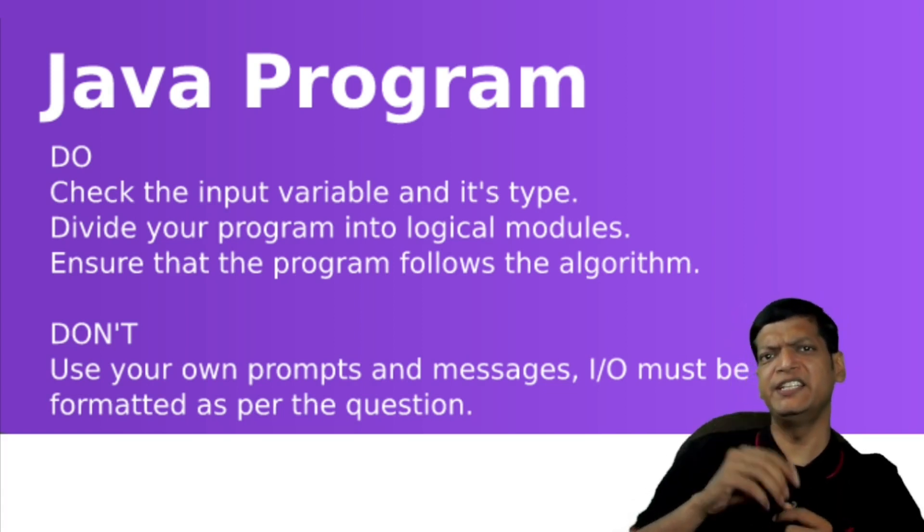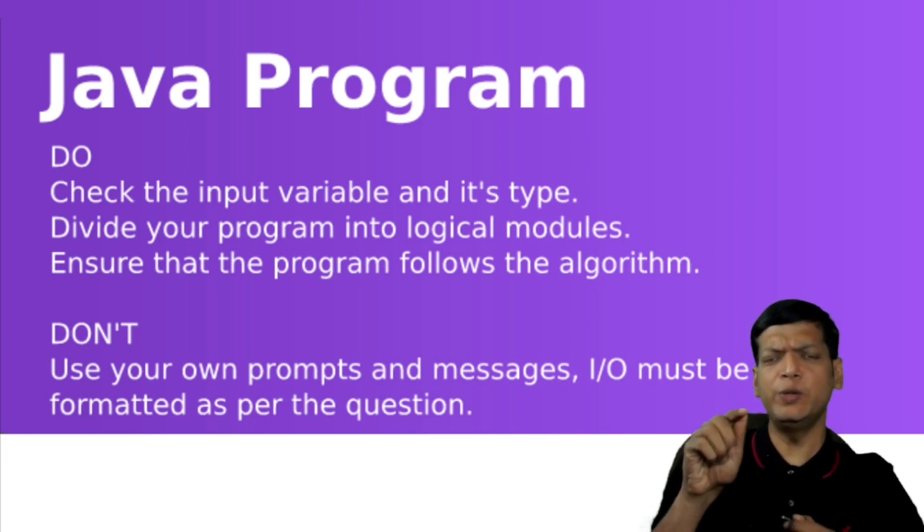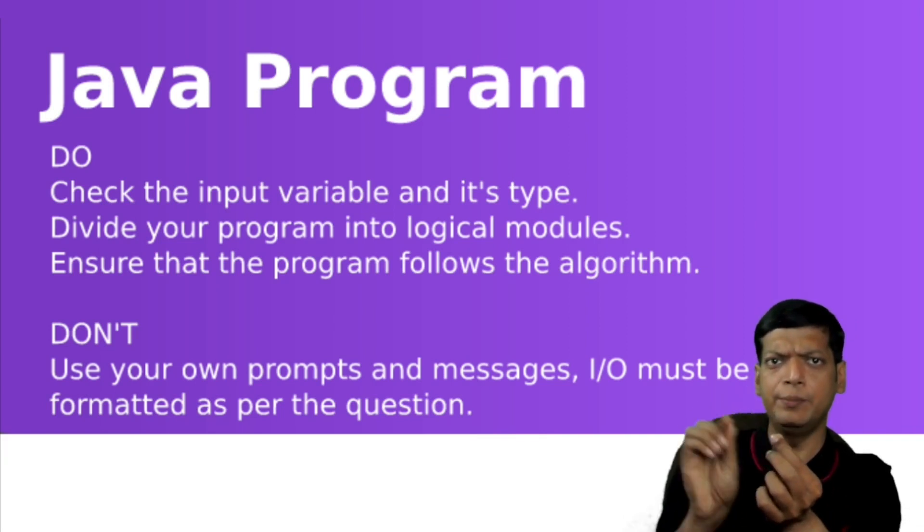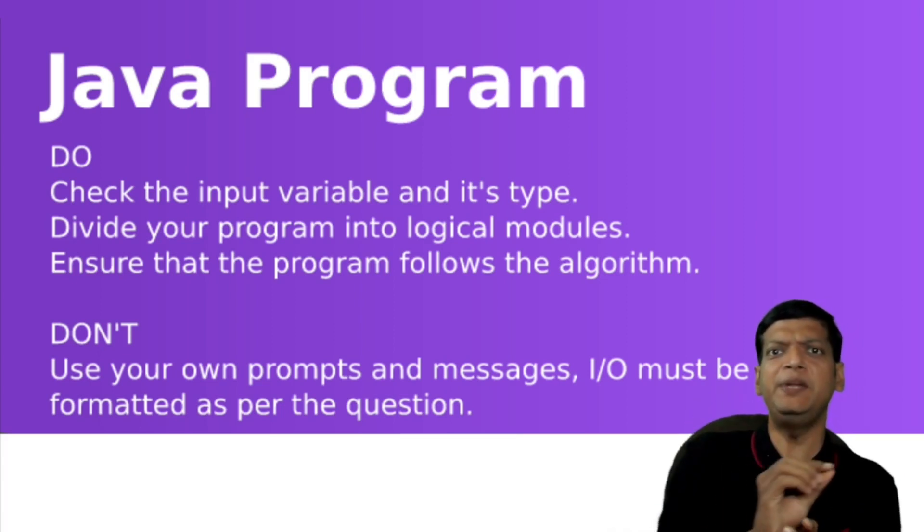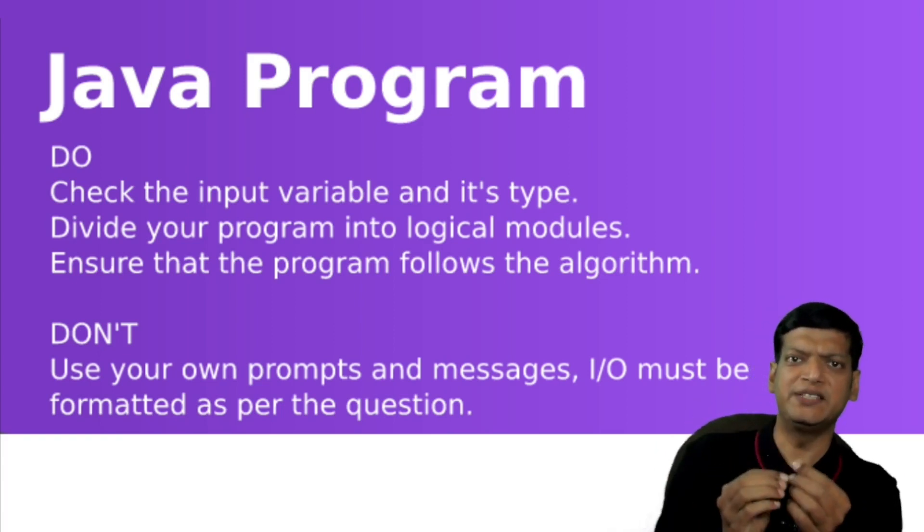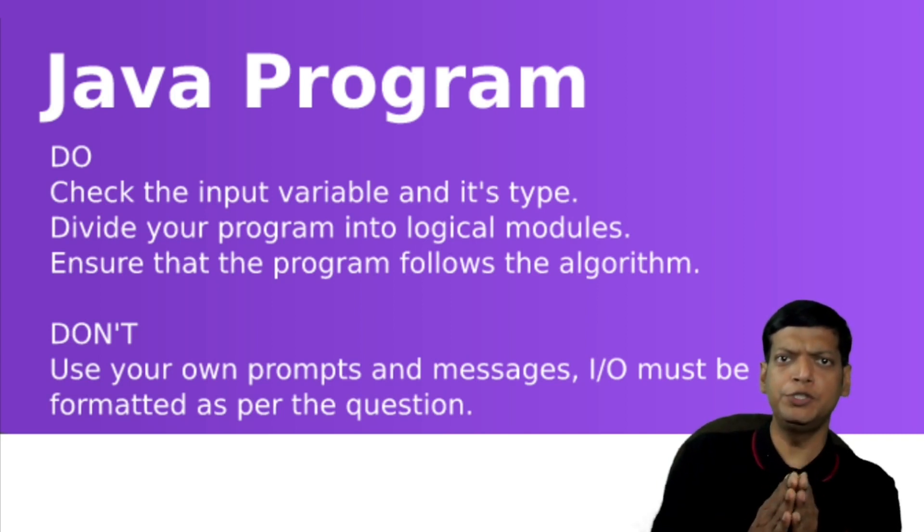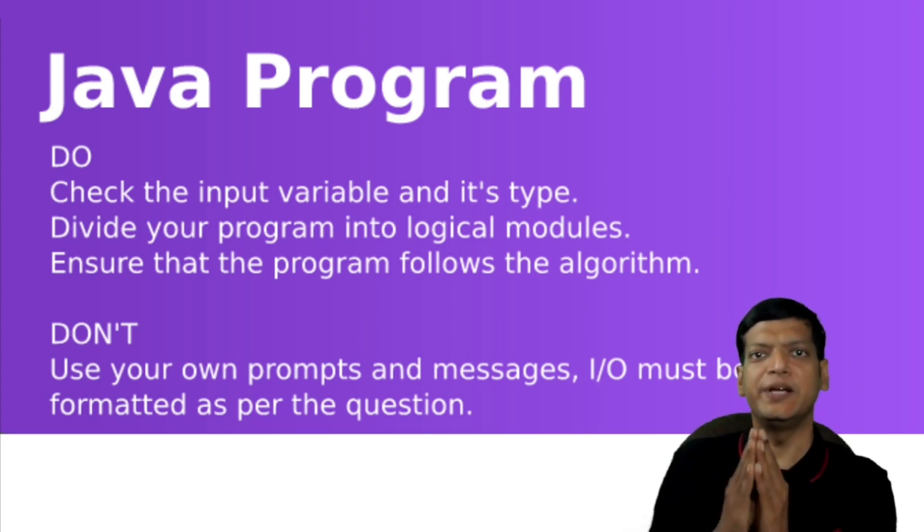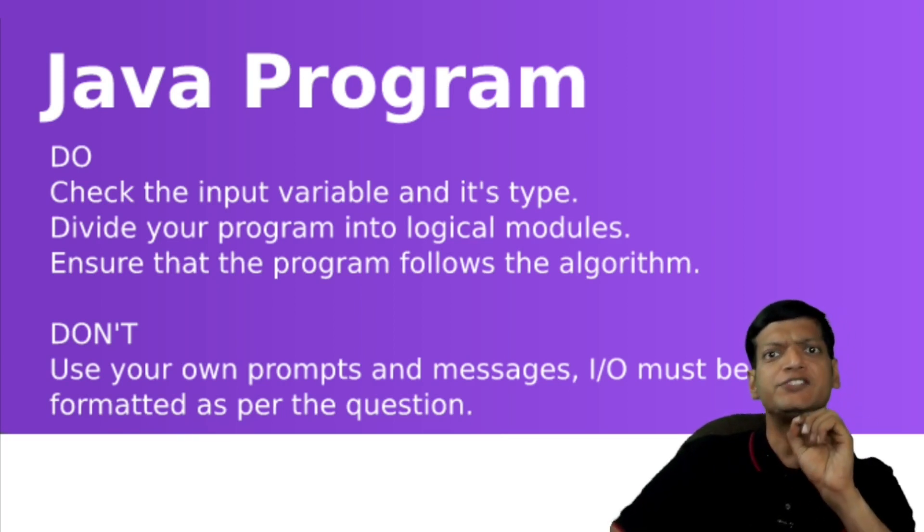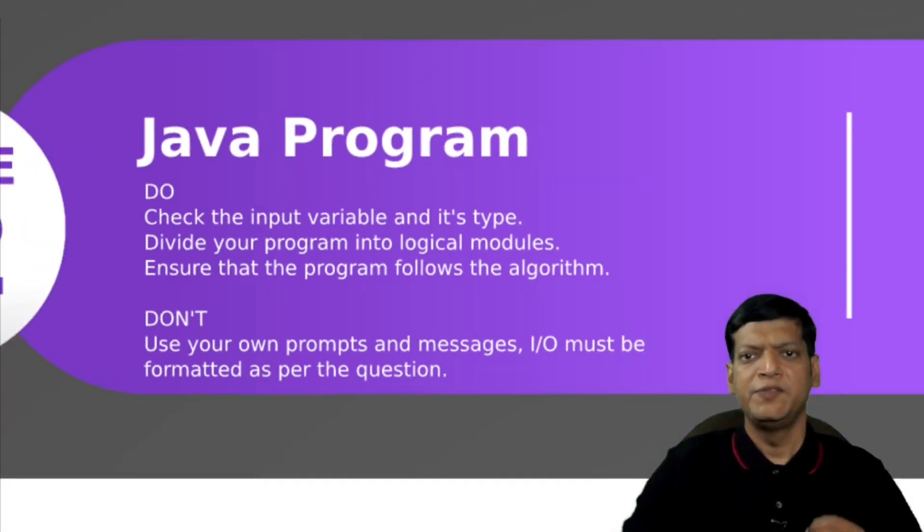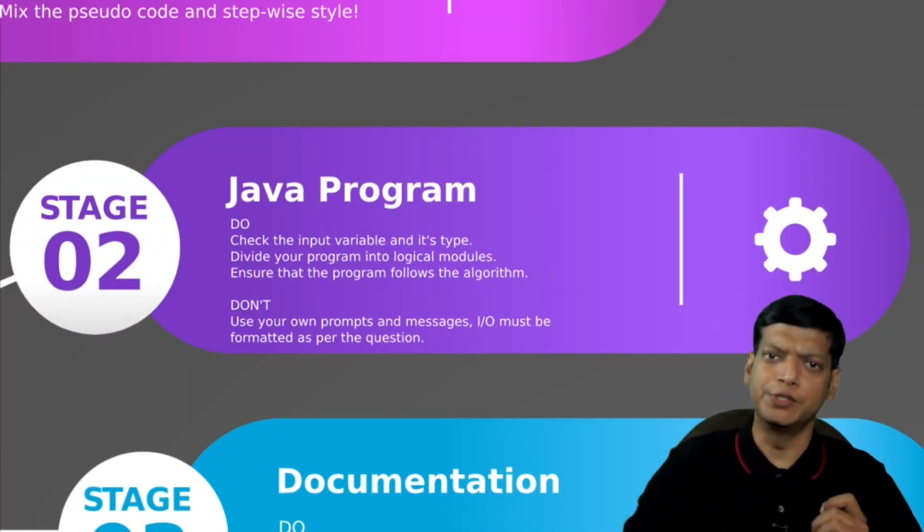So, do not use your own prompts and messages and input output must be formatted as per the question, which means like, for example, if the question says n equals to and then you are expected to type the number, so you should also say n is equal to and then you type the number. Don't say please enter an integer or some other message. The input and output should be as per the question. Also ensure that the program follows the algorithm correctly and is logically correct. The programming stage carries five marks in total.